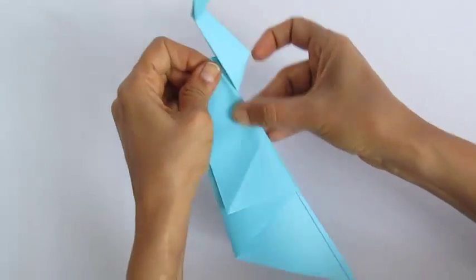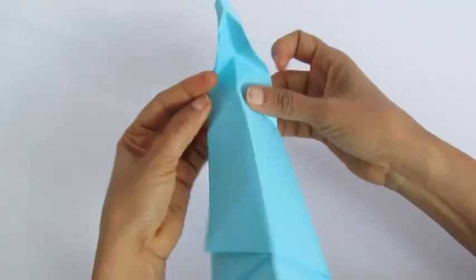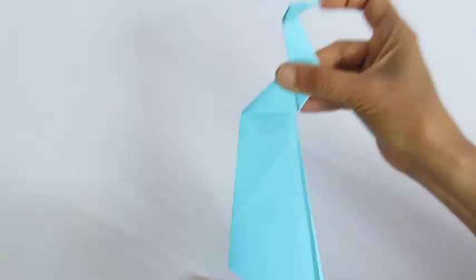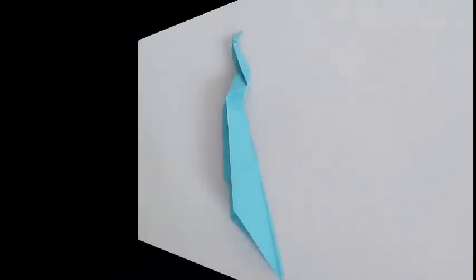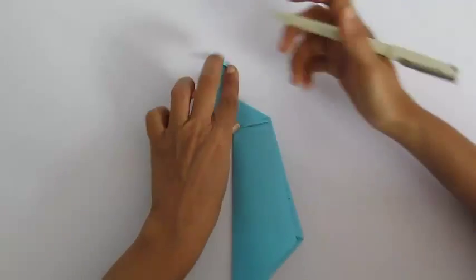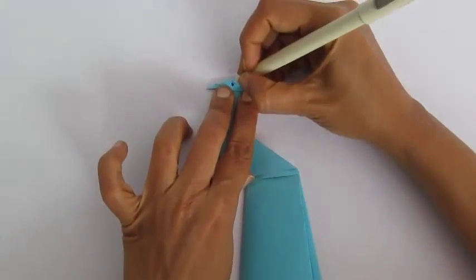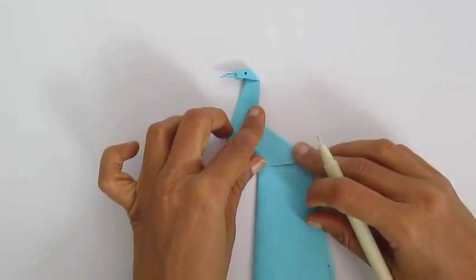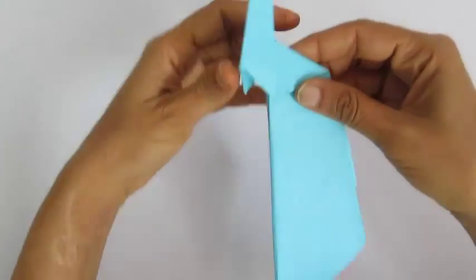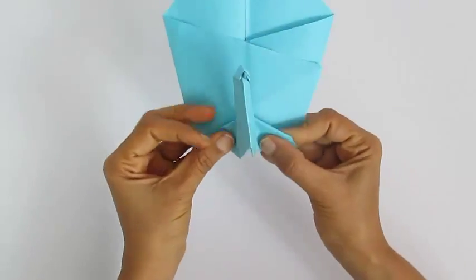And this is how we will make the wings of the peacock. Our peacock is almost ready. We just make the eyes of the peacock and unfurl the wings to make this wonderful paper protractor peacock.